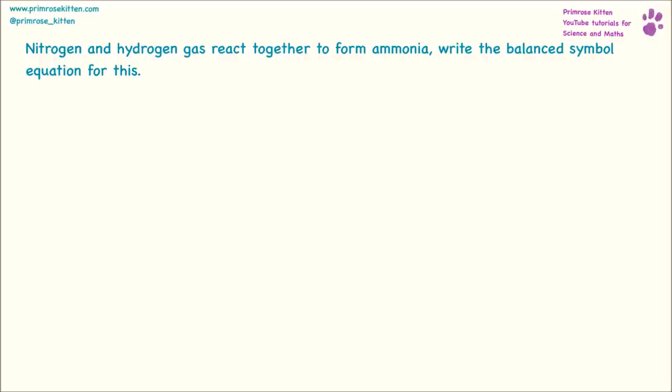Nitrogen gas and hydrogen gas react together to form ammonia. Write the balanced symbol equation for this. A sensible place to start with this is by writing out the word equation for what happens. We've taken our long complicated block of text and turned it into a slightly simpler word equation. Nitrogen gas, and these are some of the ones you have to remember.